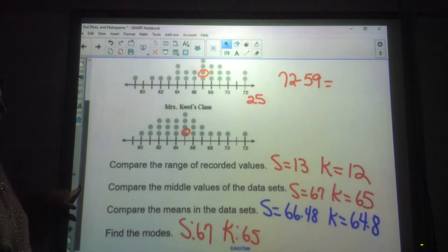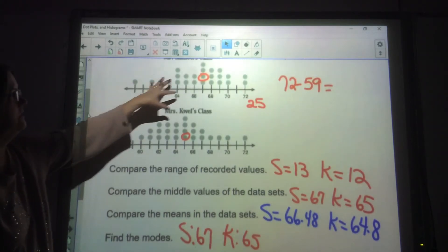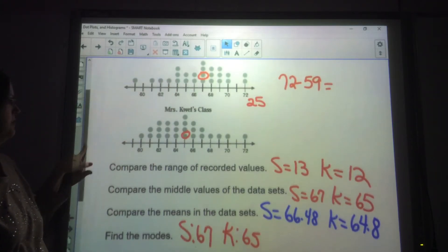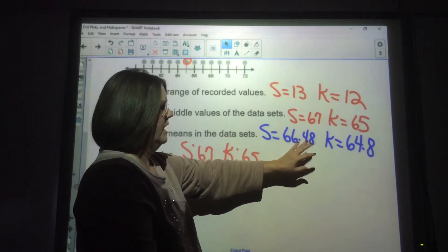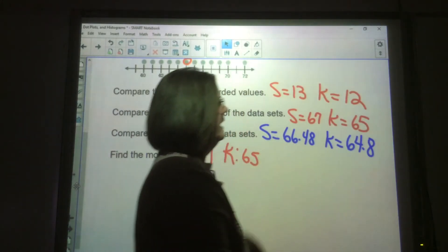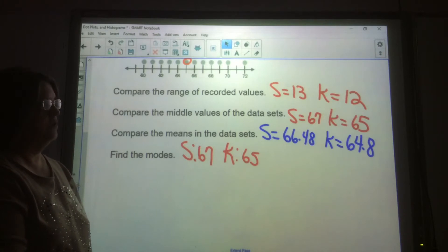And then it says compare the means. Well, Mr. Sanson, you would add them all up. You would add up every piece of data, add them all up and divide by 25. Mr. Sanson's mean is 66.48. Mrs. Quay is 64.8. You could say Mr. Sanson has a larger range, he has a larger median and a larger mean. The girls in his class are a little bit taller than the ones in Mrs. Quay's class.